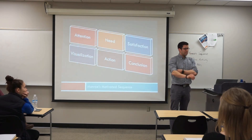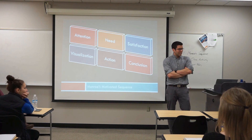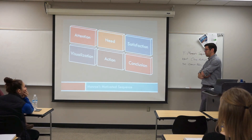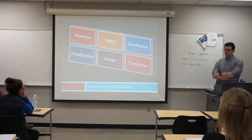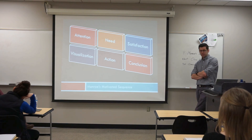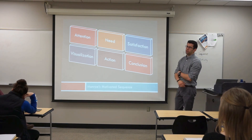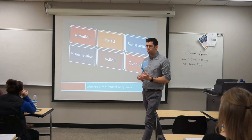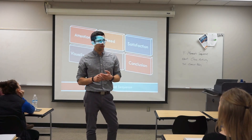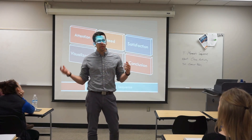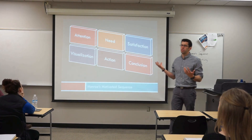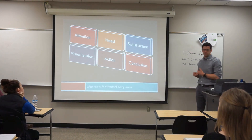The six steps are attention, need, satisfaction, visualization, action, and conclusion. These are the steps of Monroe's Motivated Sequence. What we're going to do is be thinking about your own topics for your final symposium. I'll be adding in a couple of general topics that help us think of examples.